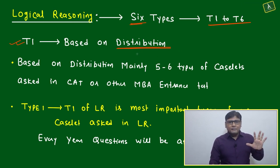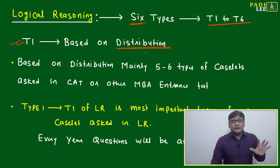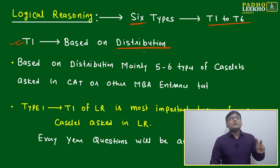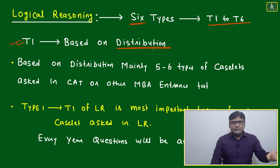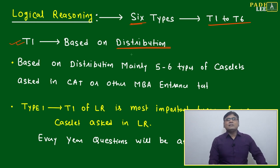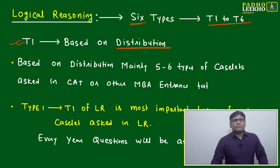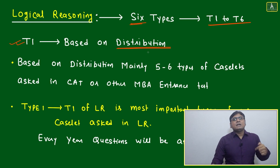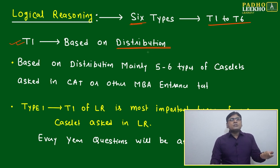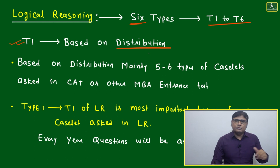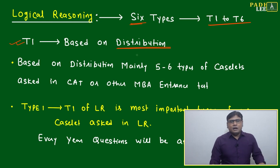Out of five case sets in DILR, two case sets were based on distribution — one directly and one indirectly. One case set was directly distribution-based, and another could be solved either based on the distribution concept or the Venn diagram, whichever you find suitable.